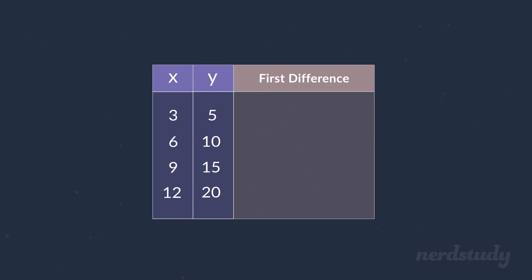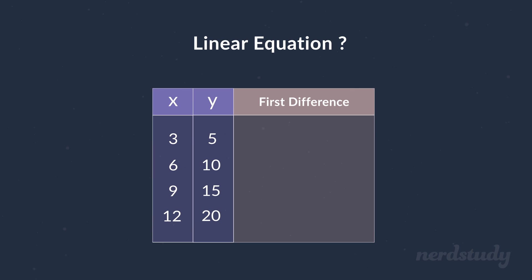Good! Now let's calculate the first differences to see if the table is suggestive of a linear equation or not. So all we need to do is start by subtracting the second value by the first value, which gives us a first difference of five here.